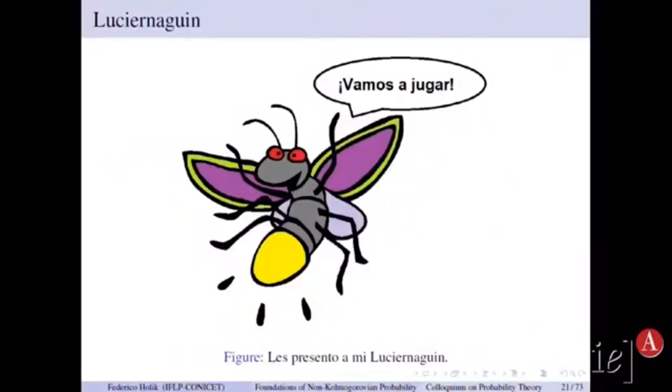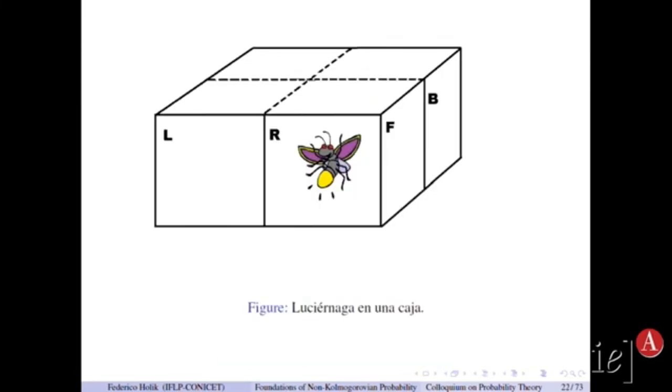So in order to explain this, I will put a toy model developed by Foulis. It's a well-known example in quantum logic, and try to explain how it's a quantum model. But of course, it will not be a quantum model. It will be a game. It is just a simple game aimed to explain the ideas behind what comes next. So the game consists in that you have a box and a firefly that can fly freely inside the box. So each run of the test, of the experiment, means that you will put the firefly on the box.